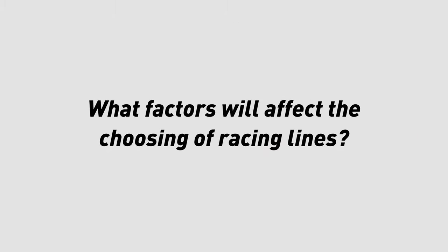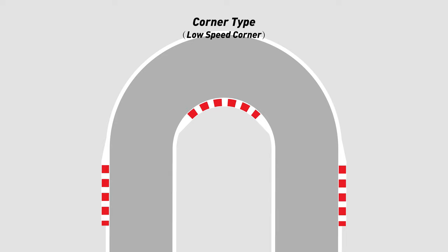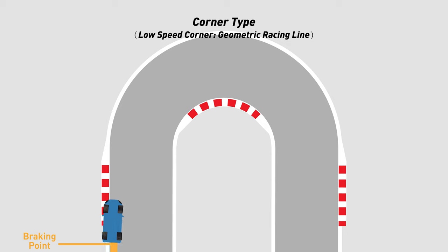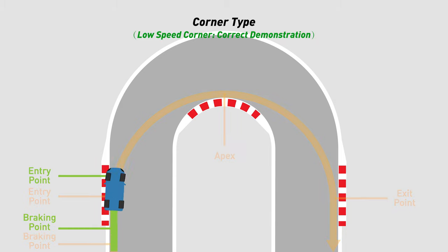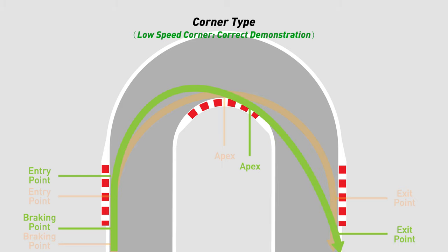There are three basic factors that will affect the choosing of racing lines. First, the racing line is determined by the type of corner. The first type is the low-speed corner, which has a large turning angle and a short track length. The geometric racing line of low-speed corners is to cut through the apex and take the shortest distance to enter and exit the corner. Comparing to the regular geometric racing line, we can choose a later braking point, later corner entry point, and later apex.